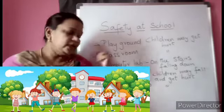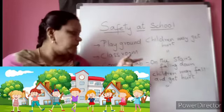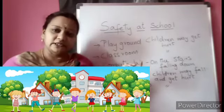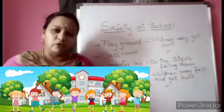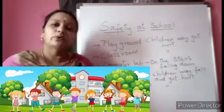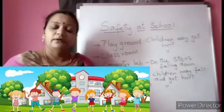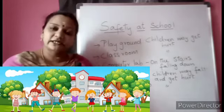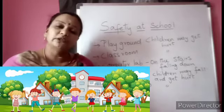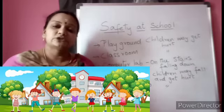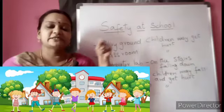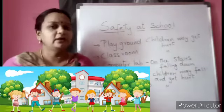In the computer lab on the stairs — not only the computer lab, but when you are climbing up and down for various classes — why do children fall down? In the corridor also, why does an accident occur? And even in the toilet, why do accidents happen? You tell me. And wanting all these reasons — why will this happen children? When we are not following the safety rules!